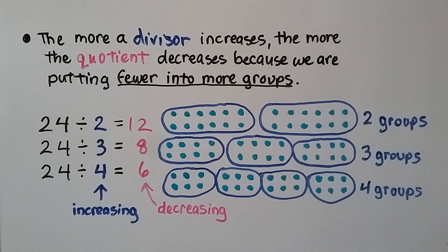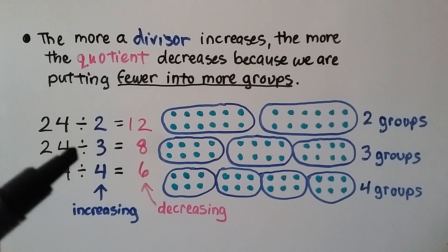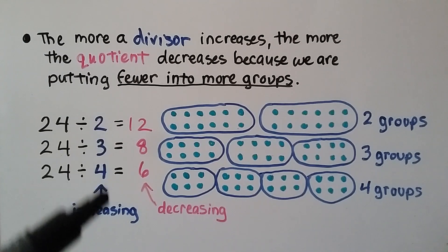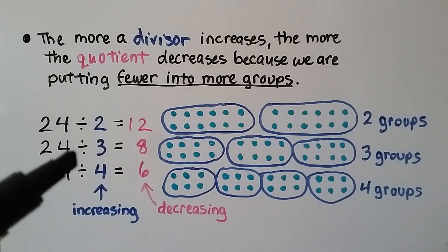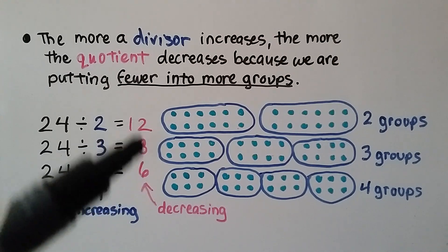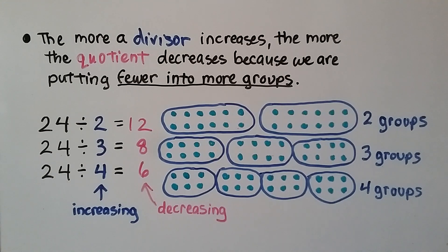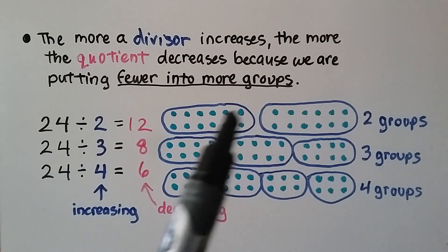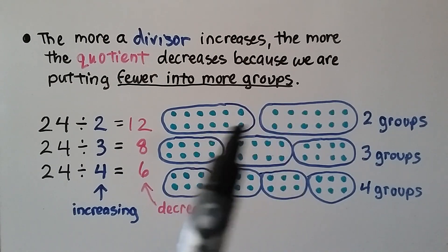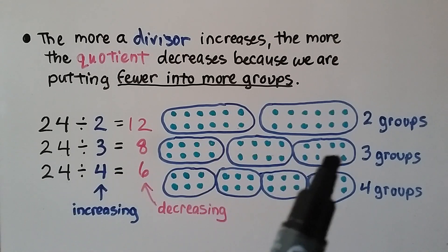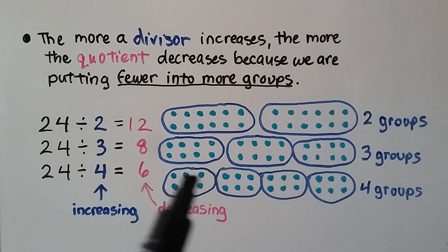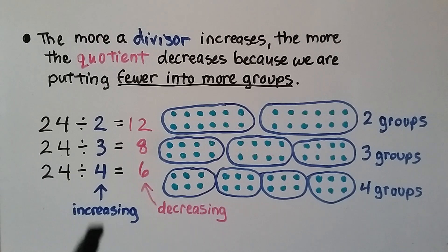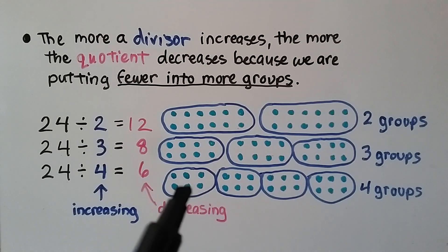The more a divisor increases, the more the quotient decreases, because we're putting fewer into more groups. Here we have 24 divided by 2, 24 divided by 3, and 24 divided by 4 — the divisor is increasing: 2, 3, 4. But our quotient is going to decrease: 24 divided by 2 is 12; 24 divided by 3 is 8; 24 divided by 4 is 6. When we have 24 divided by 2, we put 24 into two groups — 12 in each. With 24 divided by 3, spread into 3 groups, we only have 8 in each. With 24 divided by 4, we have 6 in 4 groups. So as the groups — the divisor — increased, the number in each group — the quotient — decreased.